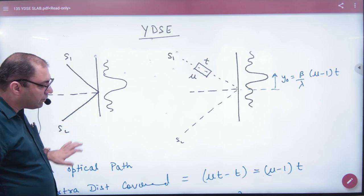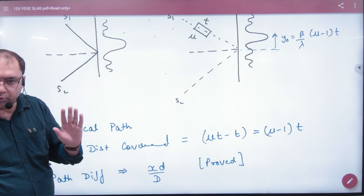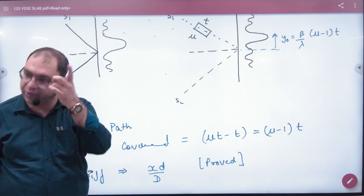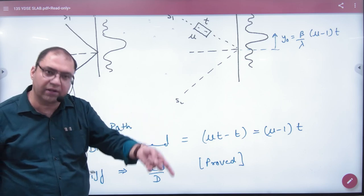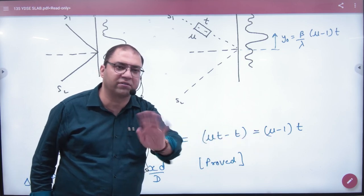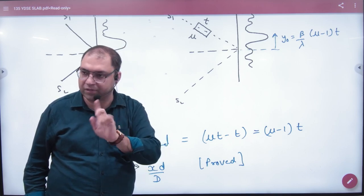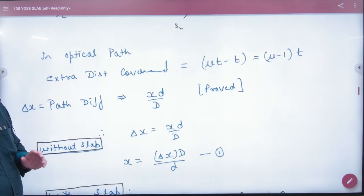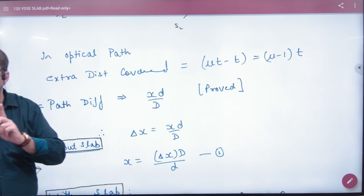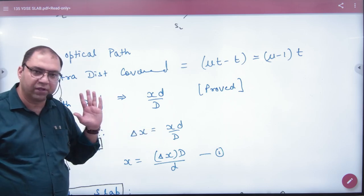Now let's apply this. Remember that in YDSE, to calculate the path difference at a point P, the formula is xd/D (x multiplied by small d, divided by capital D). But this formula applies when there is no glass slab — it is all in air. So when we use the path difference formula delta x without a slab, x refers to the distance of that point from the center, and you can cross-multiply to find x. But here we have a glass slab.